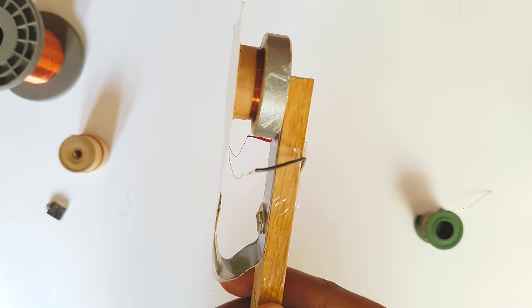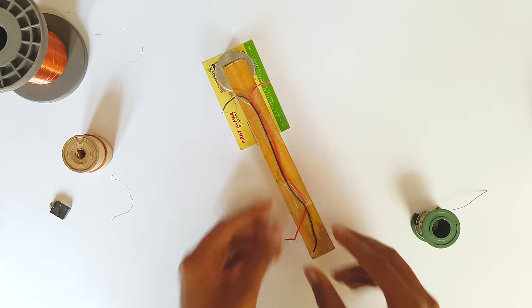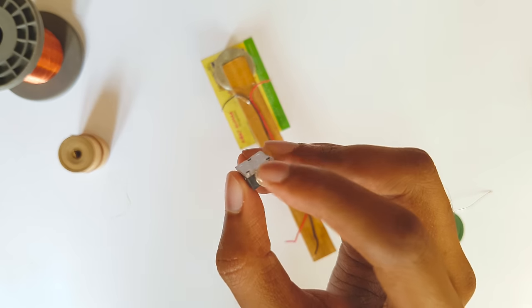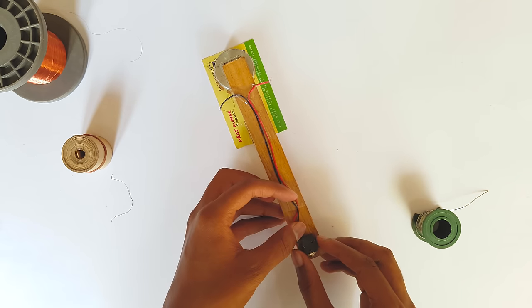The soldering part is done guys. This is how the microphone looks like. Now take the 3.5mm phono socket. We need to solder the red and black wires to this socket.